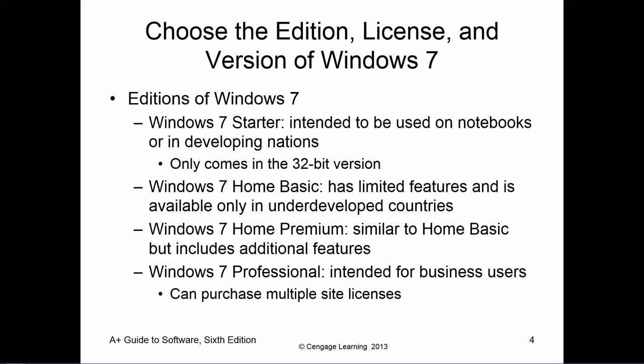A common one for home users is either Home Basic or Home Premium. Home Basic has limited features — it says only available in underdeveloped countries, but it's actually shipped in a lot of stores in the US as well. It only has scheduled backups, includes 32 or 64-bit, but doesn't include any graphical add-ons or features like Aero.